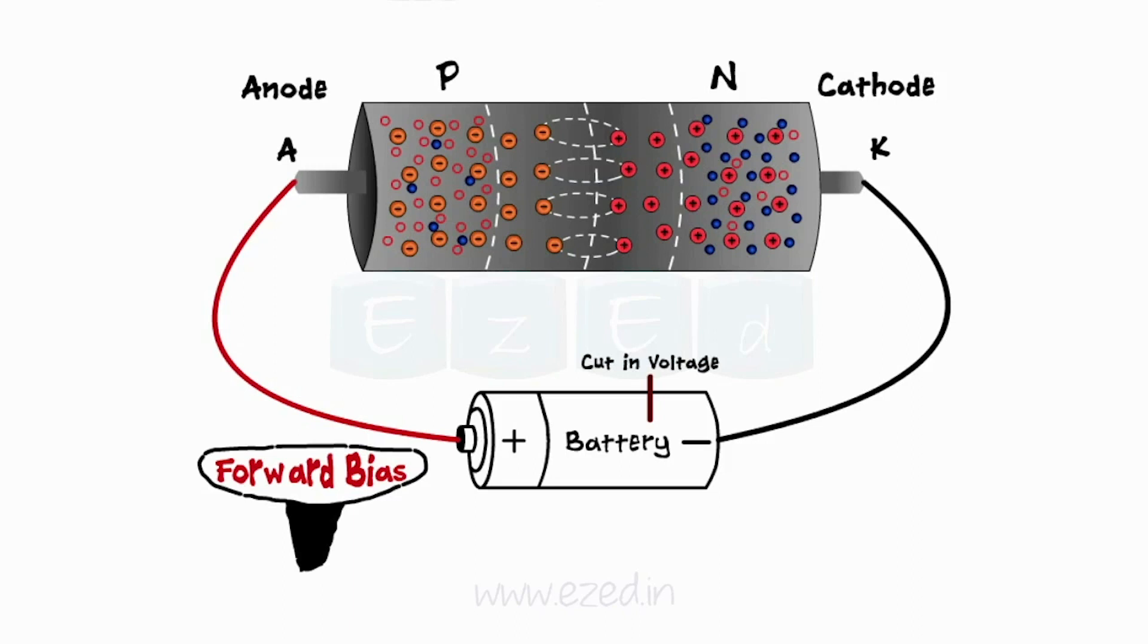Internally, this positive potential to the P side repels free holes towards the junction, and negative potential to the N side repels free electrons towards the junction. As we increase the amount of external voltage applied, electrons try to break the electric field at the depletion region to enter into the P region.